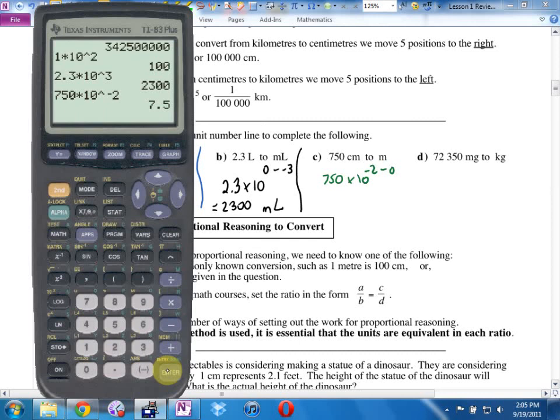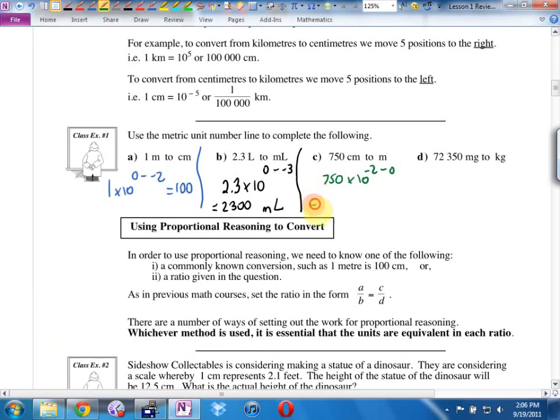We get to D. I'm willing to bet that D most of you can't do in your head and don't just automatically see the answer. No problem. I write down the number that they gave me, 72,350 times 10 to the milli. What was the exponent of 10 that went with that? Negative 3. Minus kilo. What was the exponent that went with that? 3. So, my exponent is going to be negative 3, take away 3.